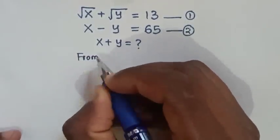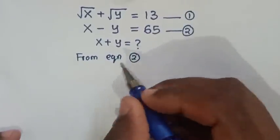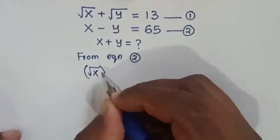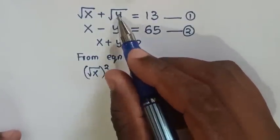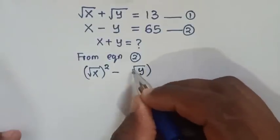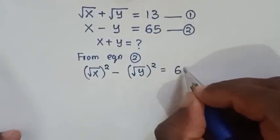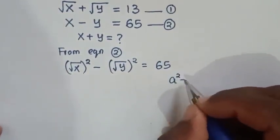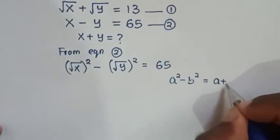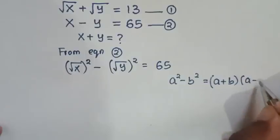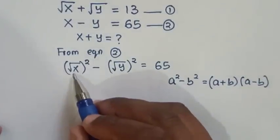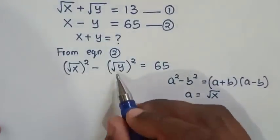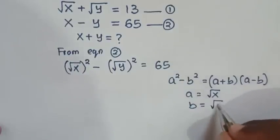From equation 2, we rewrite x as (√x)² and y as (√y)², so it becomes (√x)² minus (√y)² equals 65. This is in the form of a difference of squares, so we apply the rule: a² minus b² equals (a + b)(a minus b). Comparing, we get a equals √x and b equals √y.